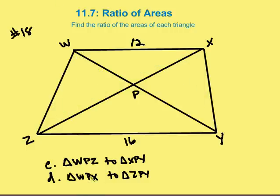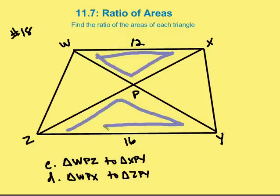Then the book asks us to compare WPX to ZPY. Now we have an interesting relationship. So, we recall that this is a trapezoid, so the bases are parallel, and so we know that these angles are congruent to each other, and also that the vertical angles are congruent.